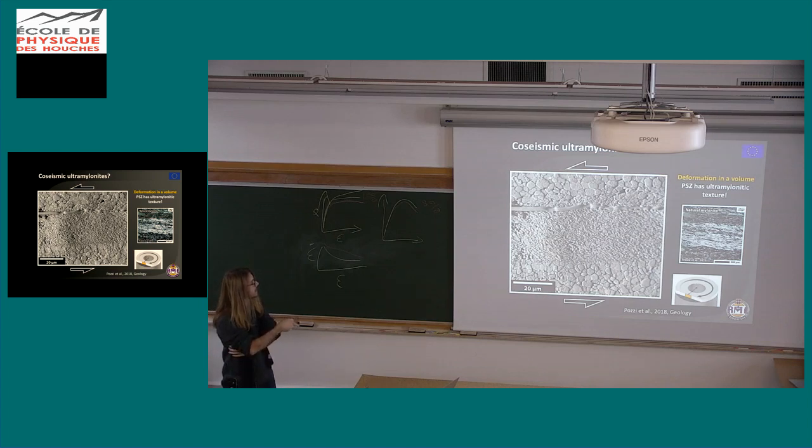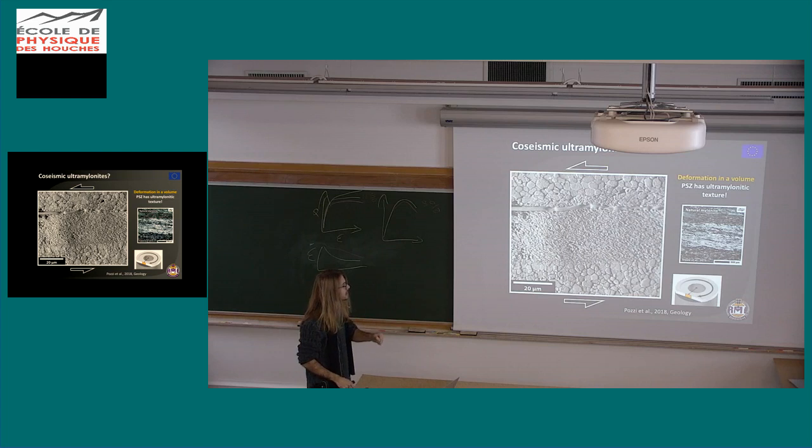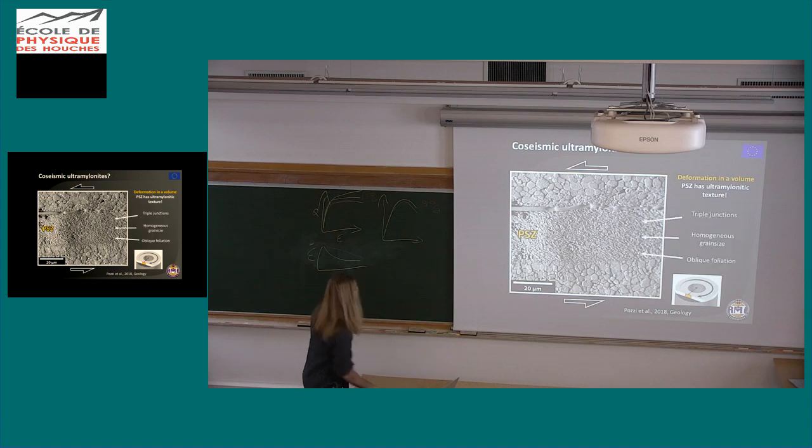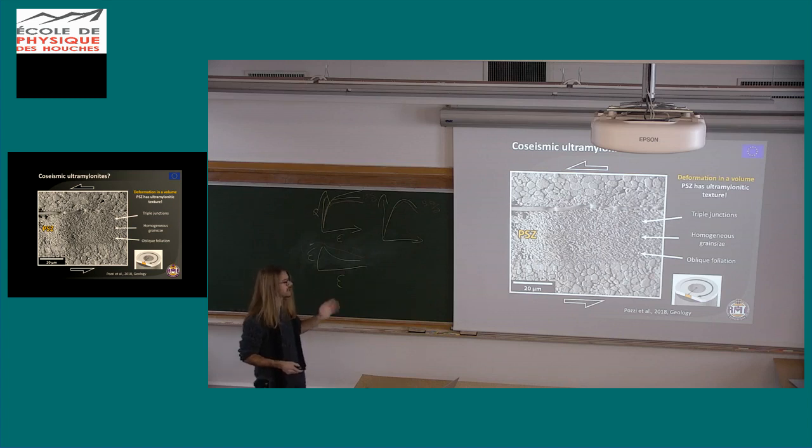And inside you see small grain size, and a particular texture quite resembling that of natural ultramylonites that are seen in the ductile regime and not in the brittle regime. It's characterized by triple junctions, fairly homogeneous grain size, an oblique foliation, and the porosity is very low when it's in the TEM.